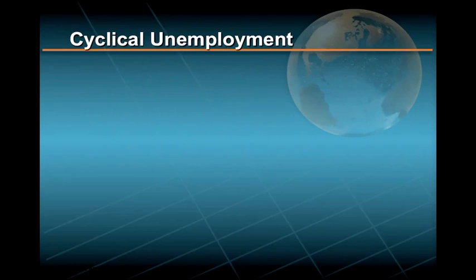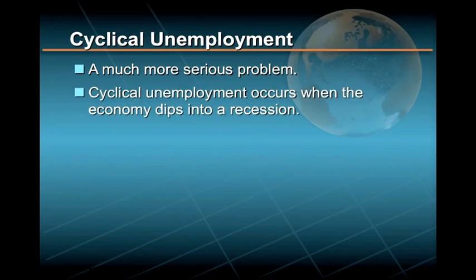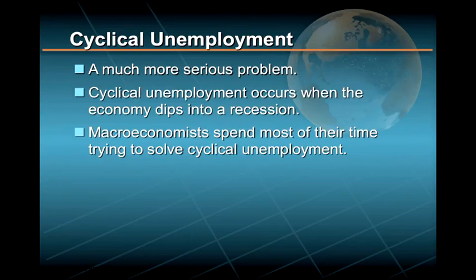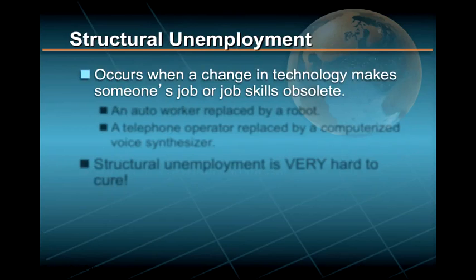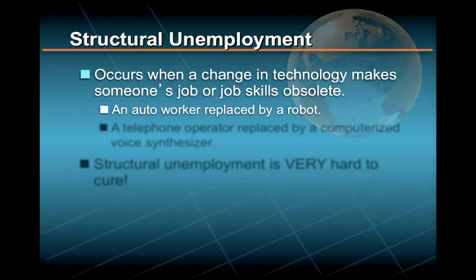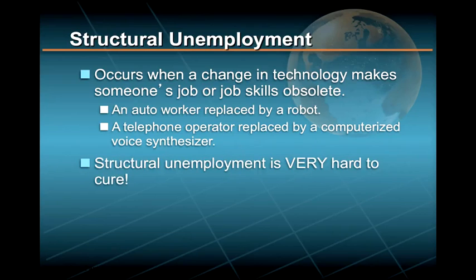Cyclical unemployment is a much more serious problem. It occurs when the economy dips into a recession, and it is this type that macroeconomists have historically spent most of their time trying to solve. In an increasingly technological age, structural unemployment has begun receiving more attention. Structural unemployment occurs when a change in technology makes someone's job obsolete — such as an auto worker replaced by a robot, or a telephone operator replaced by a computerized voice synthesizer. Structural unemployment is one of the hardest kinds to cure.